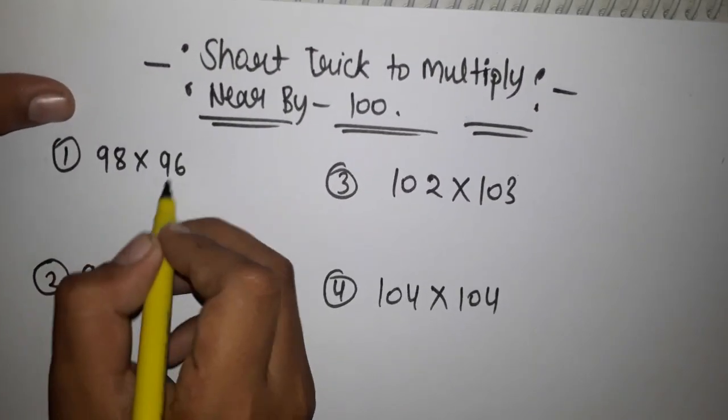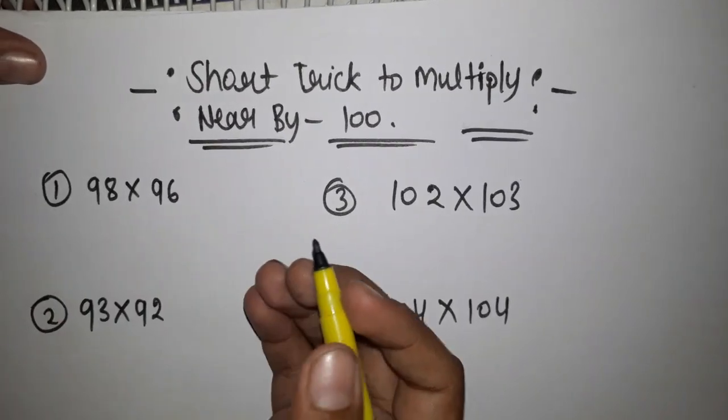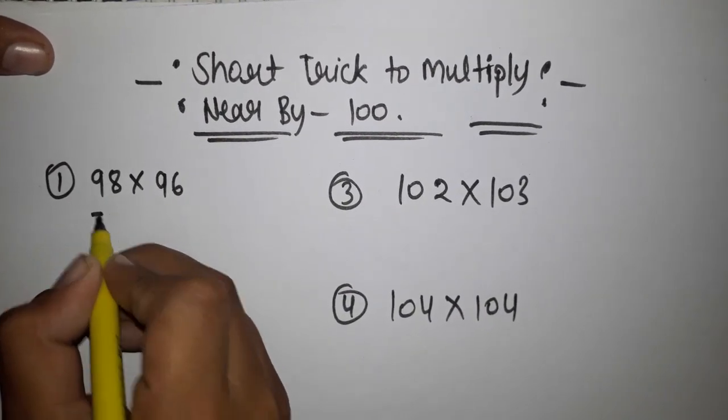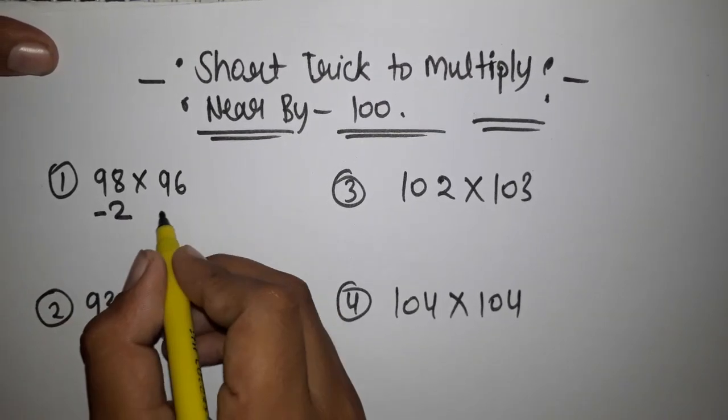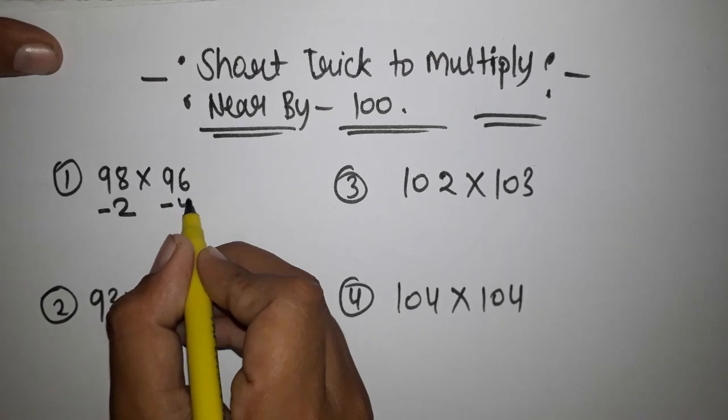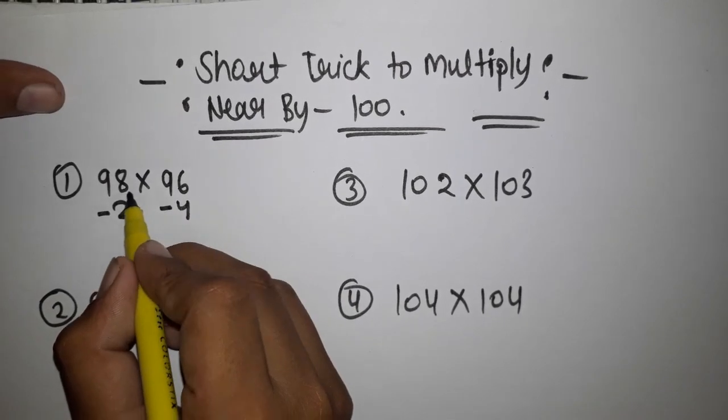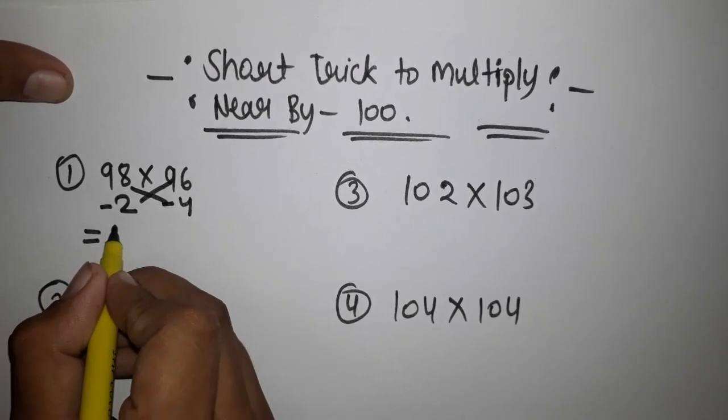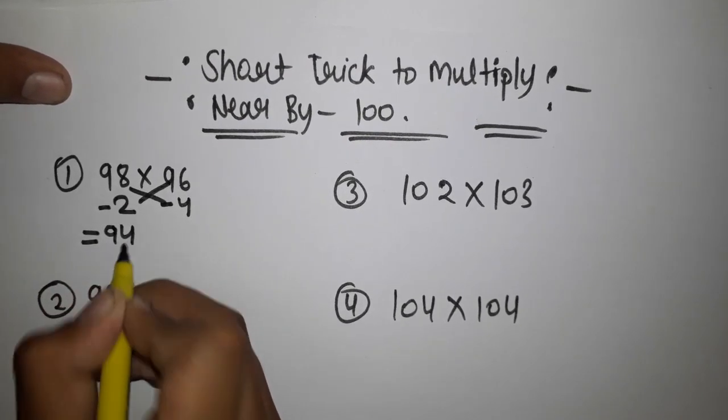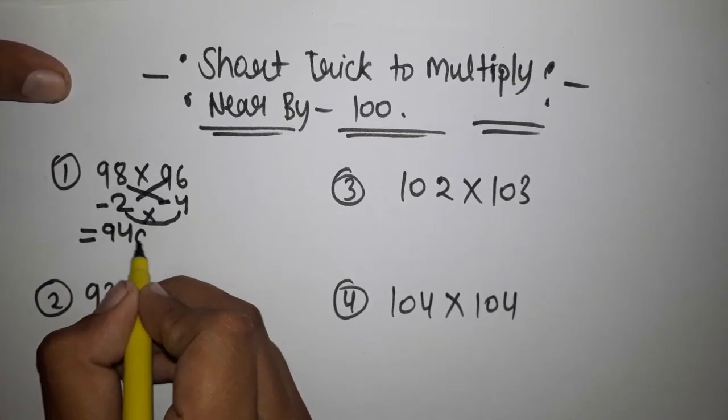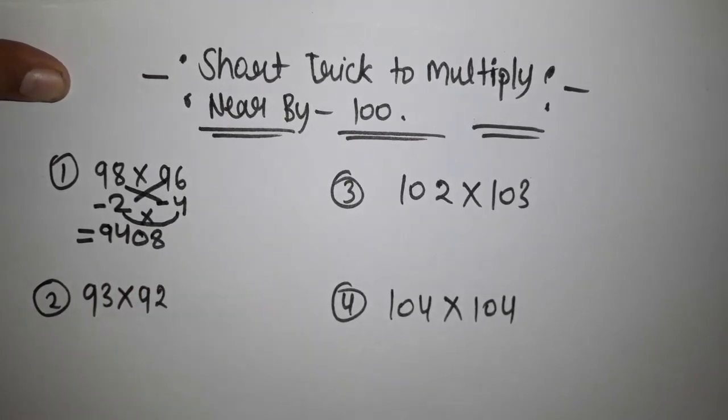98 multiply 96. So firstly we have to see that 98 is minus 2 from 100, and 96 is minus 4 from 100. Then we have to minus these, so the answer came to 94. Then we have to multiply 2 into 4, which is 08. This is our answer.